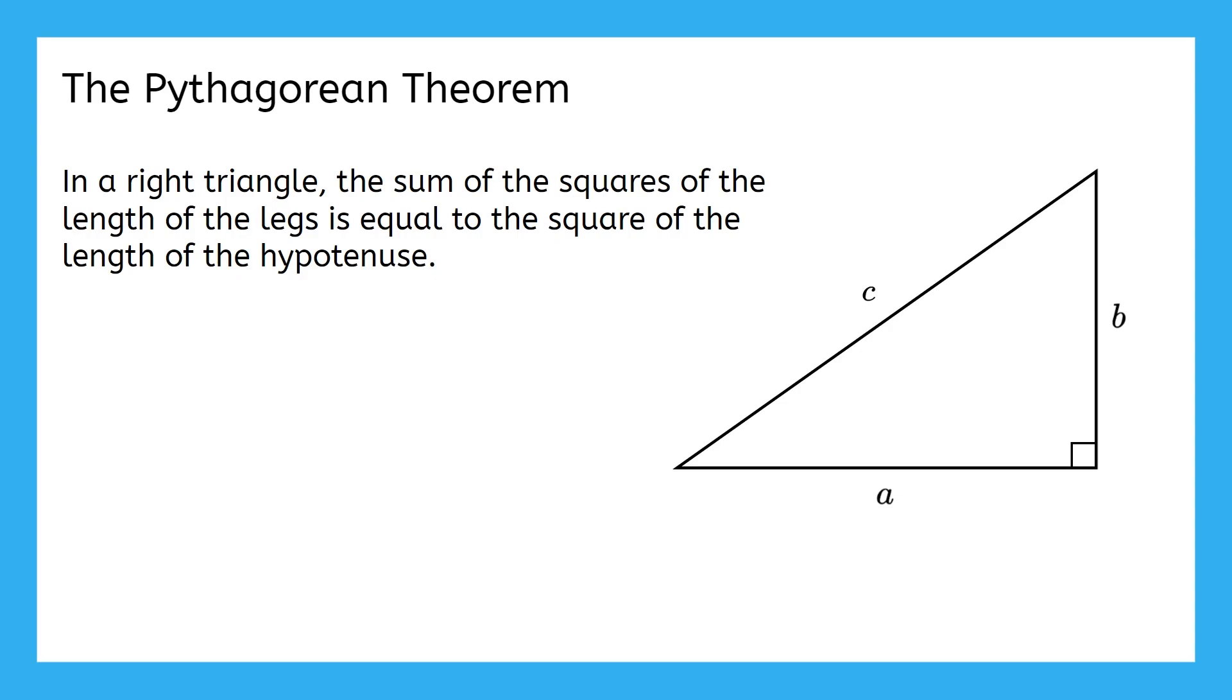Using these labels, we can then write the formula for the Pythagorean theorem: a squared plus b squared equals c squared.